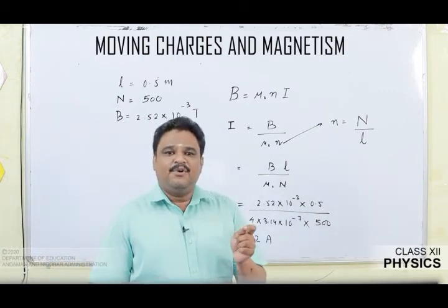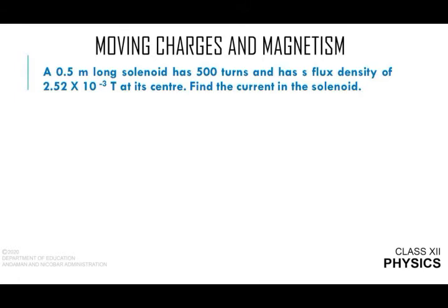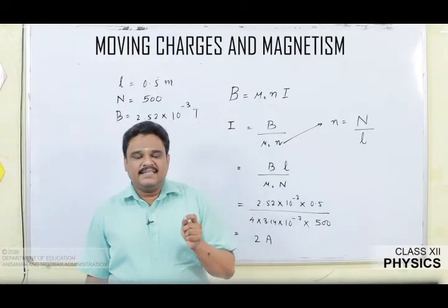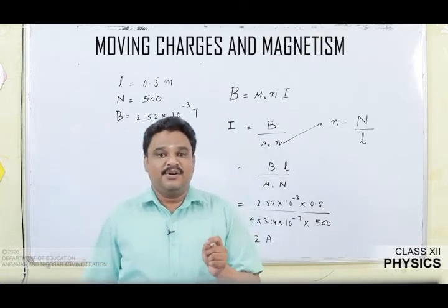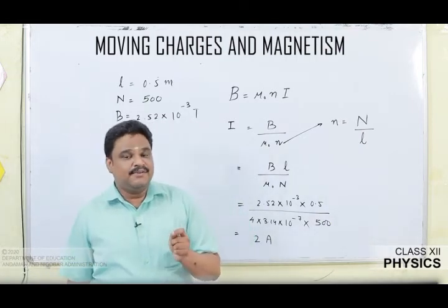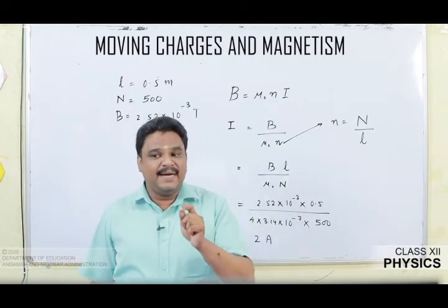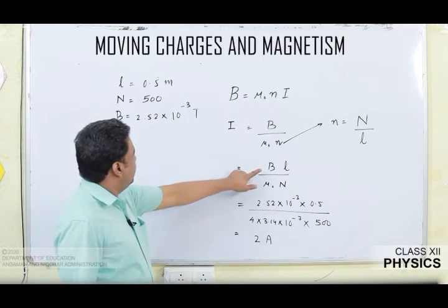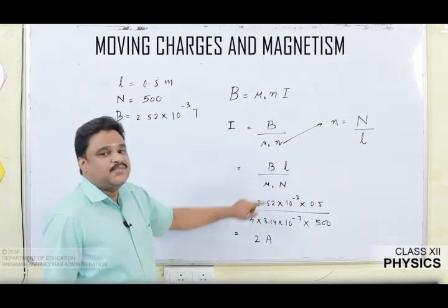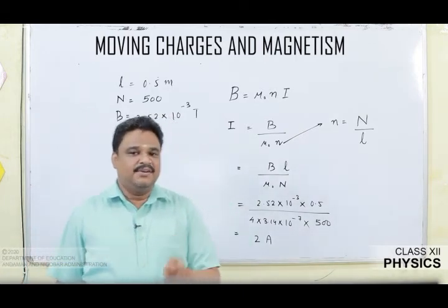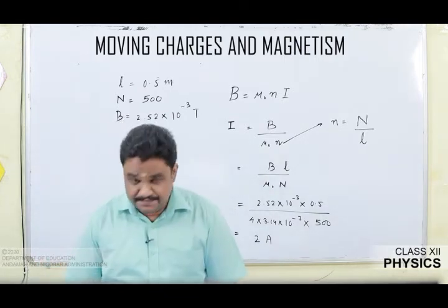To summarize question 1: a 0.5 m long solenoid with N = 500 turns and B = 2.52 × 10⁻³ Tesla. Using B = μ₀nI with n = N/L, and substituting μ₀ = 4π × 10⁻⁷, the current flowing through the solenoid is 2 ampere.